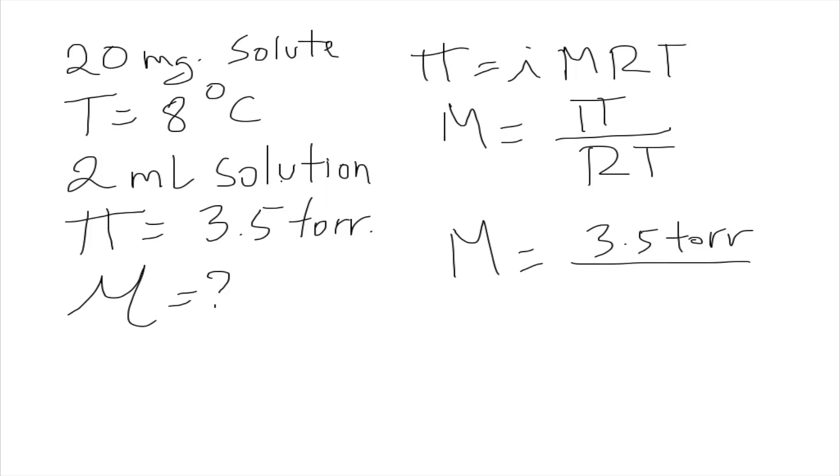We have 3.5 torr. Actually, we need to convert that into atmospheres. And that would be 0.0046 atmospheres. R is 0.0821 liter·atmosphere/(mol·kelvin). And then our temperature is 8 Celsius, which we have to convert to kelvin, 273.15, and that gives us 281.15 kelvin.